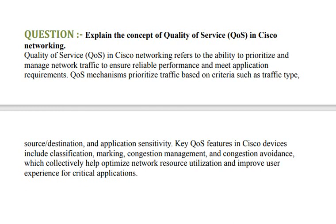Quality of Service in Cisco networking refers to the ability to prioritize and manage network traffic to ensure reliable performance and meet application requirements. QoS mechanisms prioritize traffic based on criteria such as traffic type, source, destination, and application sensitivity. Key QoS features in Cisco devices include classification, marking, congestion management, and congestion avoidance, which collectively help optimize network resource utilization and improve user experience.